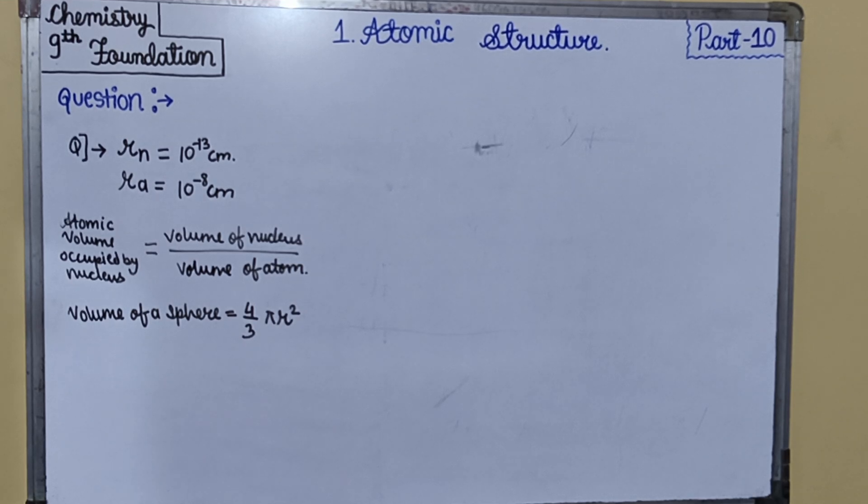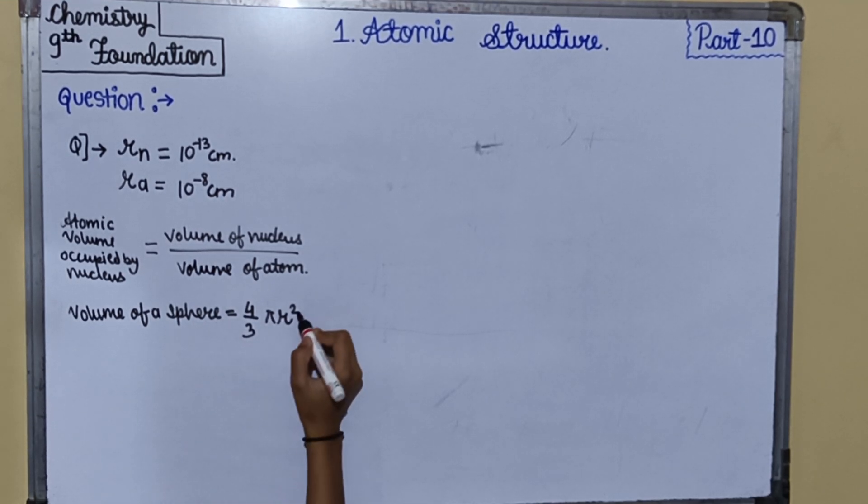We were up till the volume of sphere, that is 4/3 πr³. Now we'll apply the formula to nucleus and atom.